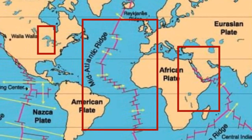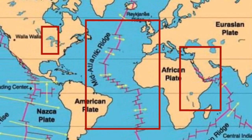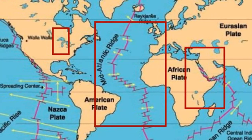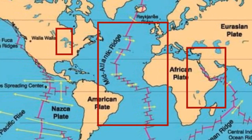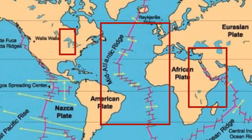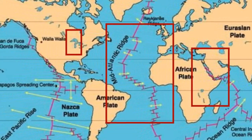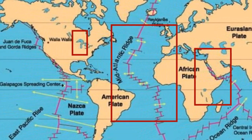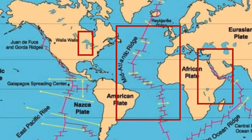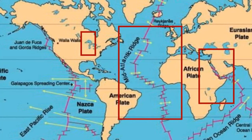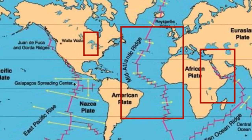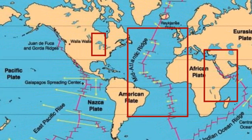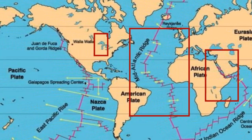Three examples of rifting systems are discussed: the young East Africa rift including the Red Sea, the mature mid-Atlantic Ridge, and the Keweenawan failed rift in the US mid-continent.